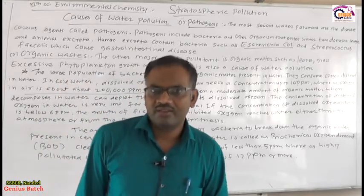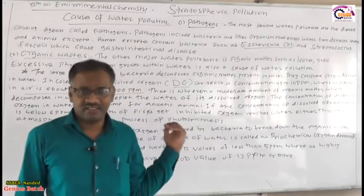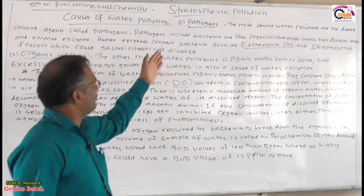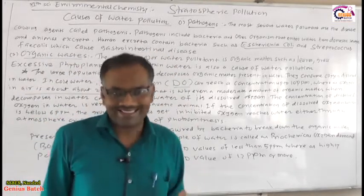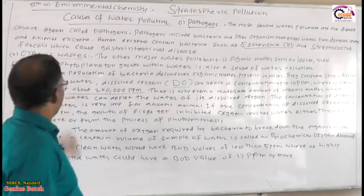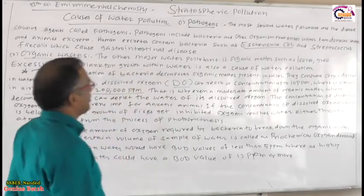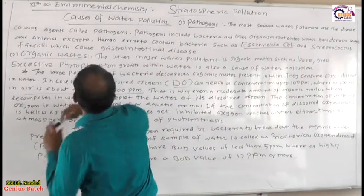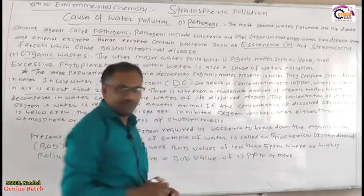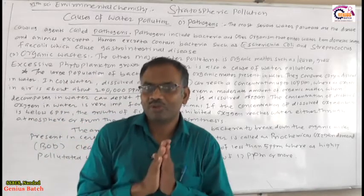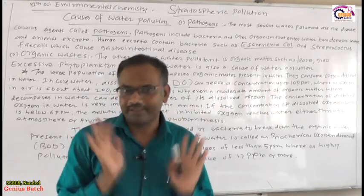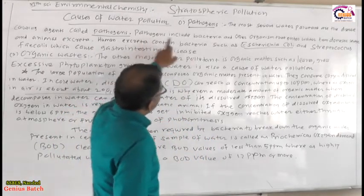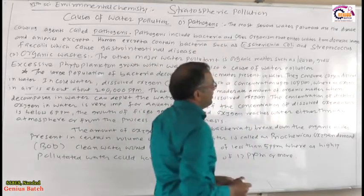Many exam questions — in AIIMS and AIPMT — have been asked on pathogens and organic waste. The most serious water pollutants are the disease-causing agents called pathogens. Pathogens include bacteria, fungi, and viruses. These enter water from domestic sewage and animal excreta.